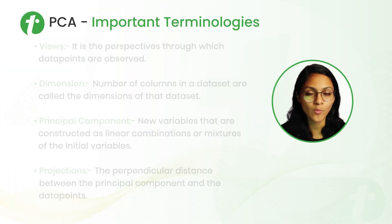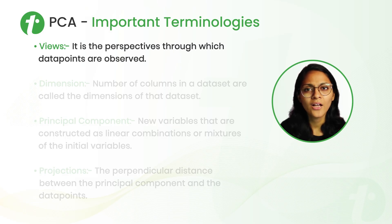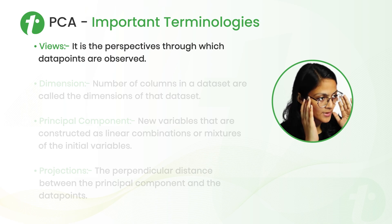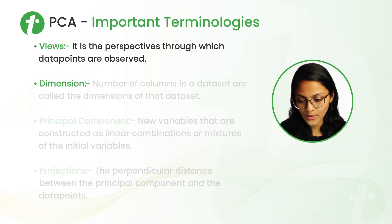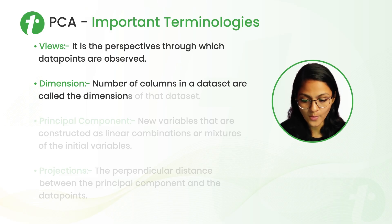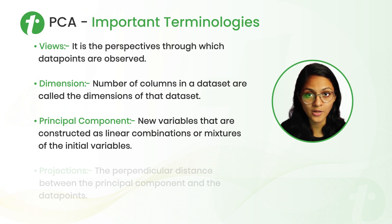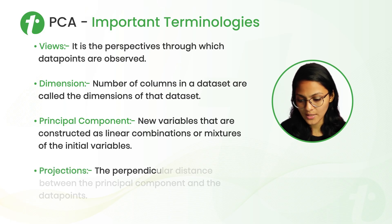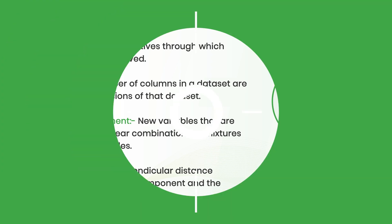Let's talk about the important terminologies of Principal Component Analysis. First is View: the perspective through which data points are observed. Next is Dimensions: the number of columns in the dataset. Next is Principal Component: a new variable constructed as a linear combination of the initial variables. Finally, Projection: the perpendicular distance between the Principal Component and the data points.